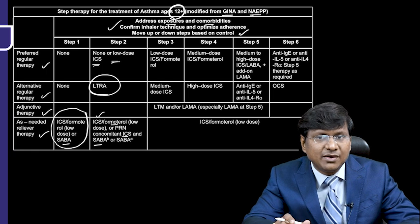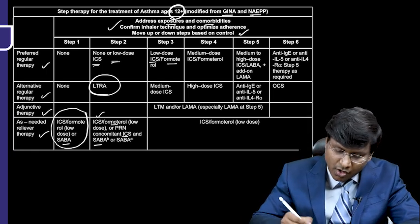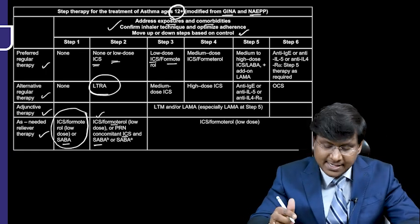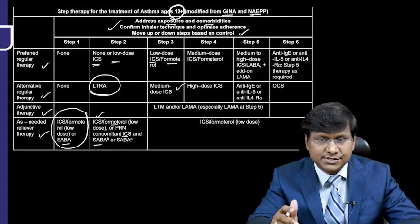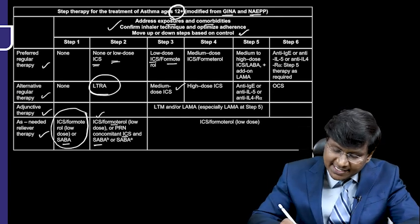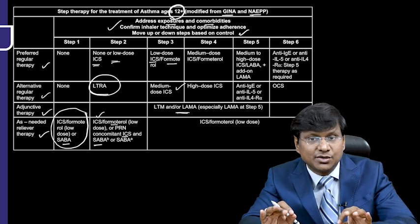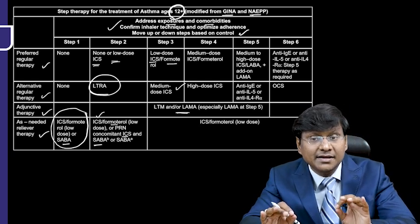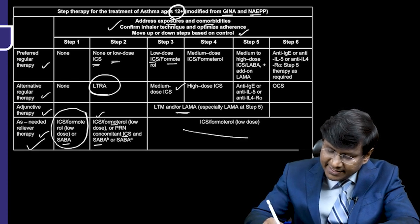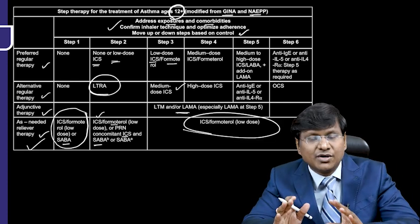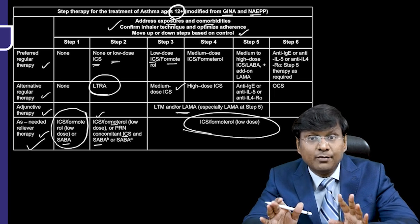In Step 3, low-dose inhaled corticosteroids plus formoterol is the preferred regular therapy. The alternative therapy is medium-dose inhaled corticosteroids. The adjunctive therapy is a long-acting muscarinic antagonist (LAMA). The reliever therapy is low-dose inhaled corticosteroids or formoterol.